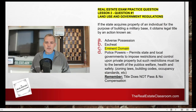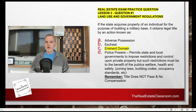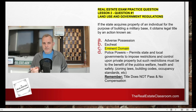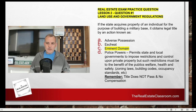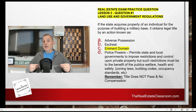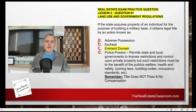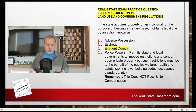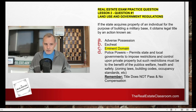Police powers is the last one. Police powers permits the state and local governments to impose restrictions and control upon private property — and I'll explain that this also extends to the federal government in a minute. These restrictions and controls must be in the public's benefit, to benefit the public through welfare, health, and safety. Common examples include zoning laws, building codes, and occupancy standards — those types of regulations imposed on private ownership and private owners.